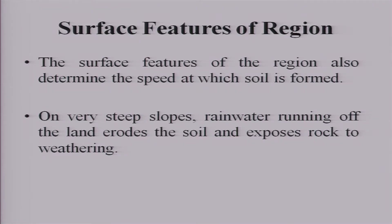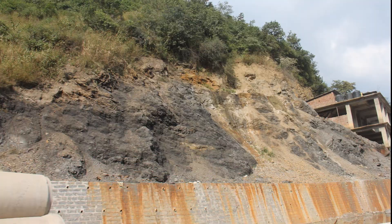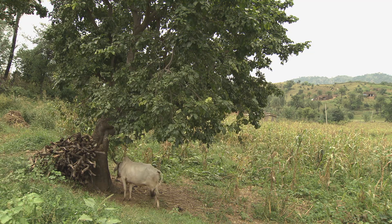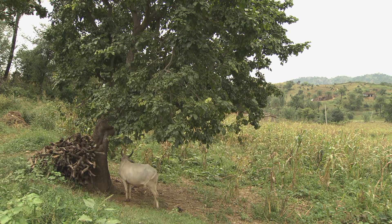Surface features of the region — that is, topography — are also important. On very steep slopes, rainwater running off the land erodes the soil and exposes the rock to weathering. In a stable low-lying area, a different kind of soil will form.